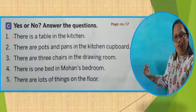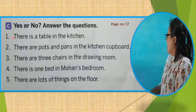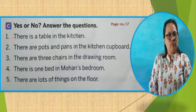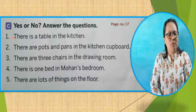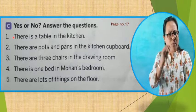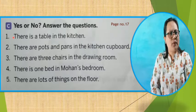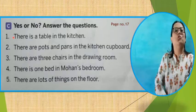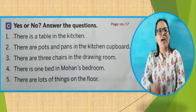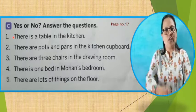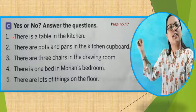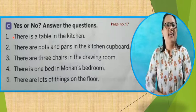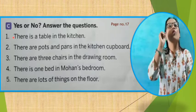Let's see number 4: There is 1 bed in Mohan's bedroom. Was there only 1 bed in Mohan's bedroom? No — because Maya also used to sleep in Mohan's bedroom. So how many beds were there? 2. Yes children, there were 2 beds. The question says only 1, so our answer will be N-O, no.